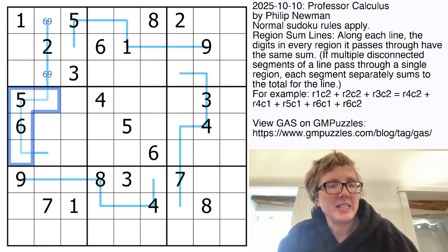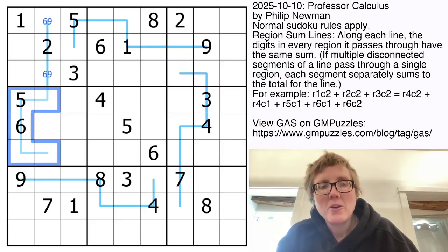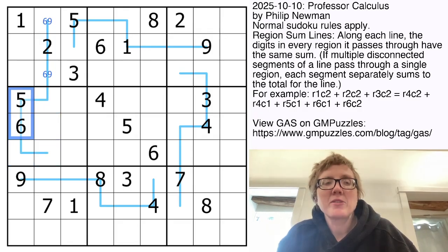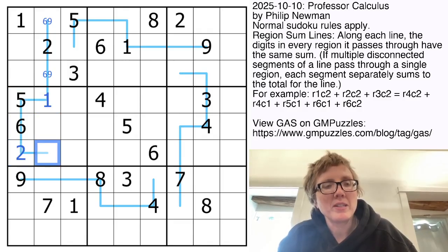Now, if we look at the line in region 4, we already have a sum of 11 here, so we need 6 more to get to 17. So that's going to have to be 1, 2, 3, which will go there, there, and there.